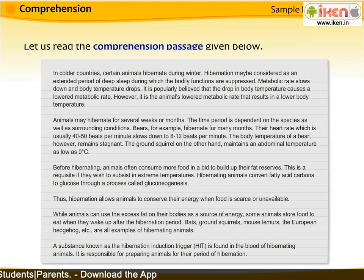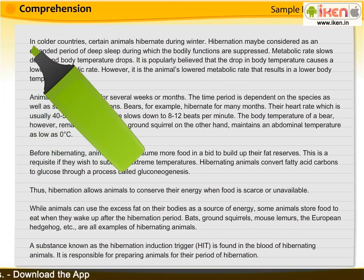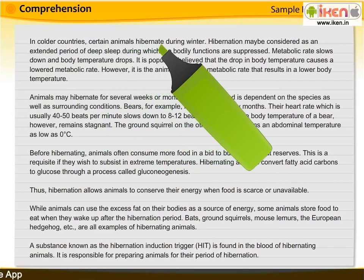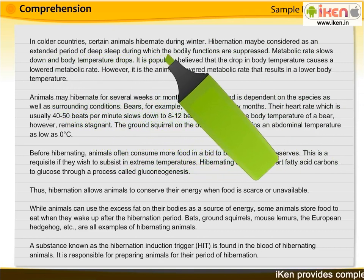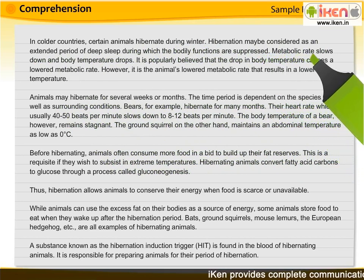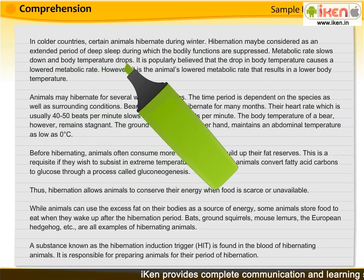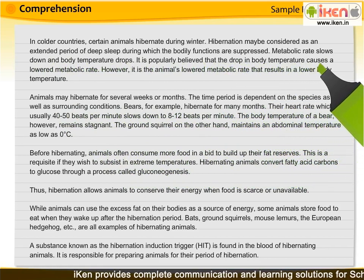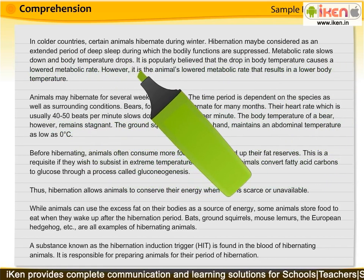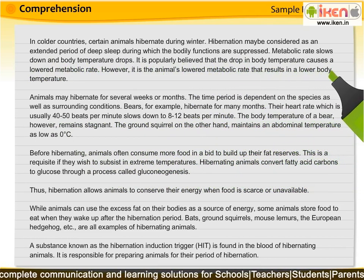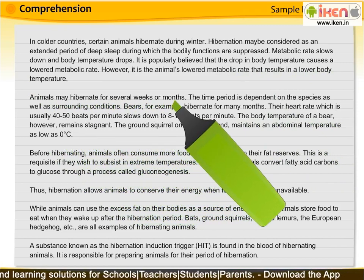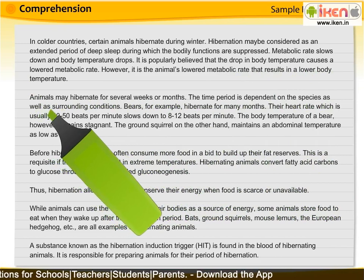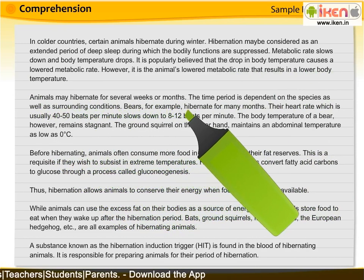Let us read the comprehension passage given below. In colder countries, certain animals hibernate during winter. Hibernation may be considered as an extended period of deep sleep during which the bodily functions are suppressed. Metabolic rate slows down and body temperature drops. It is popularly believed that the drop in body temperature causes a lowered metabolic rate. However, it is the animal's lowered metabolic rate that results in a lower body temperature. Animals may hibernate for several weeks or months. The time period is dependent on the species as well as surrounding conditions. Bears, for example, hibernate for many months.